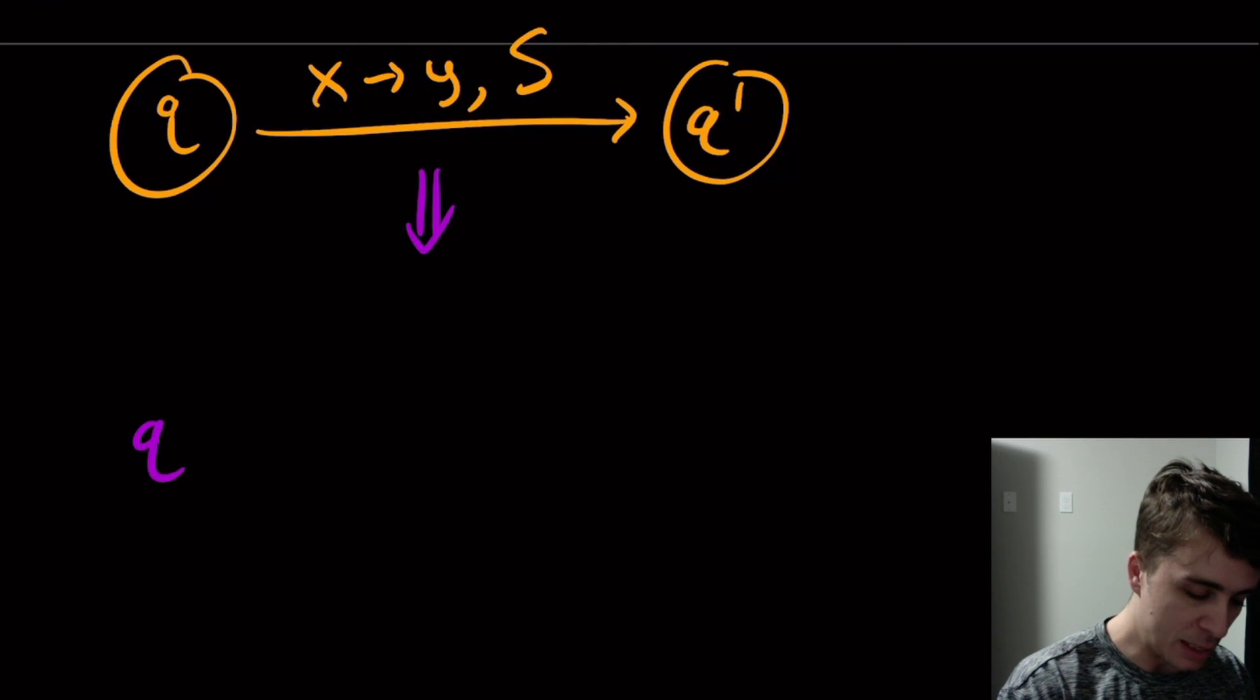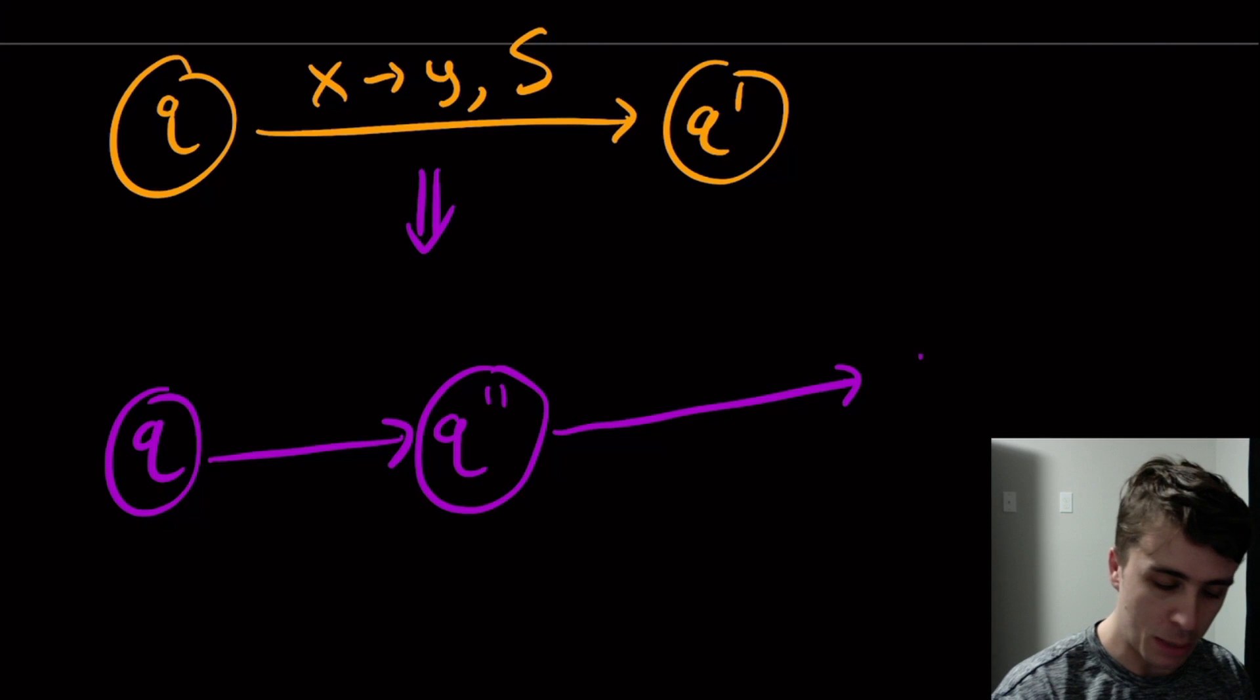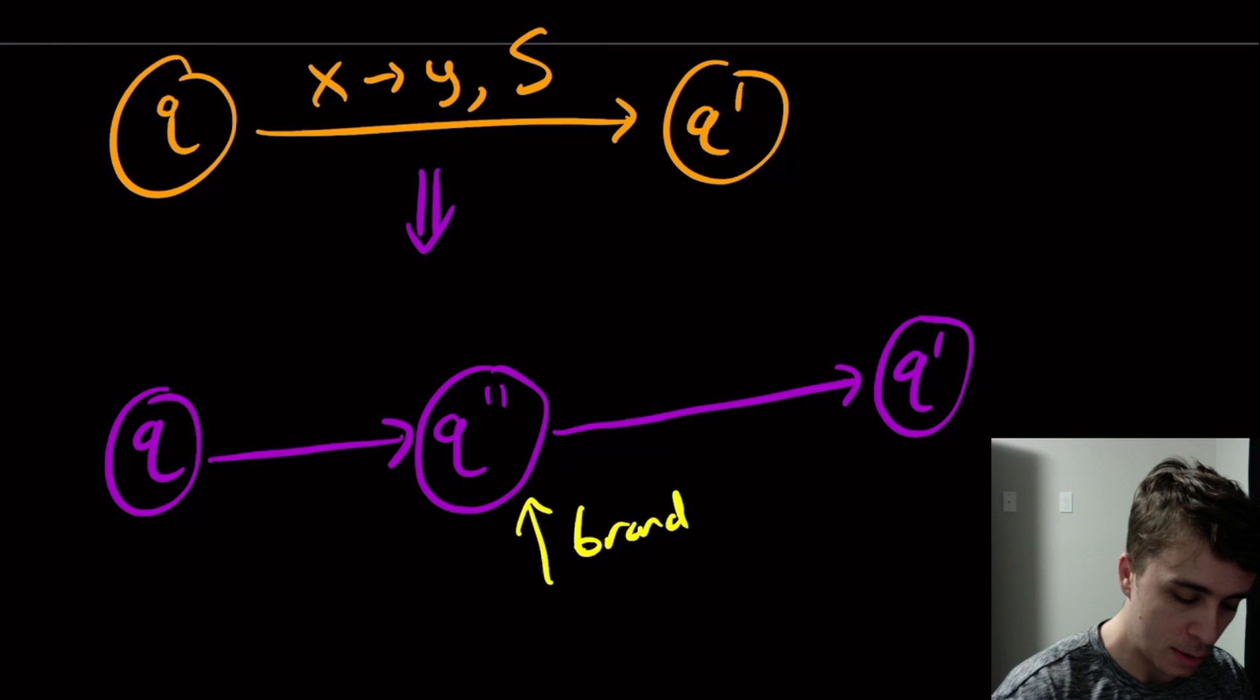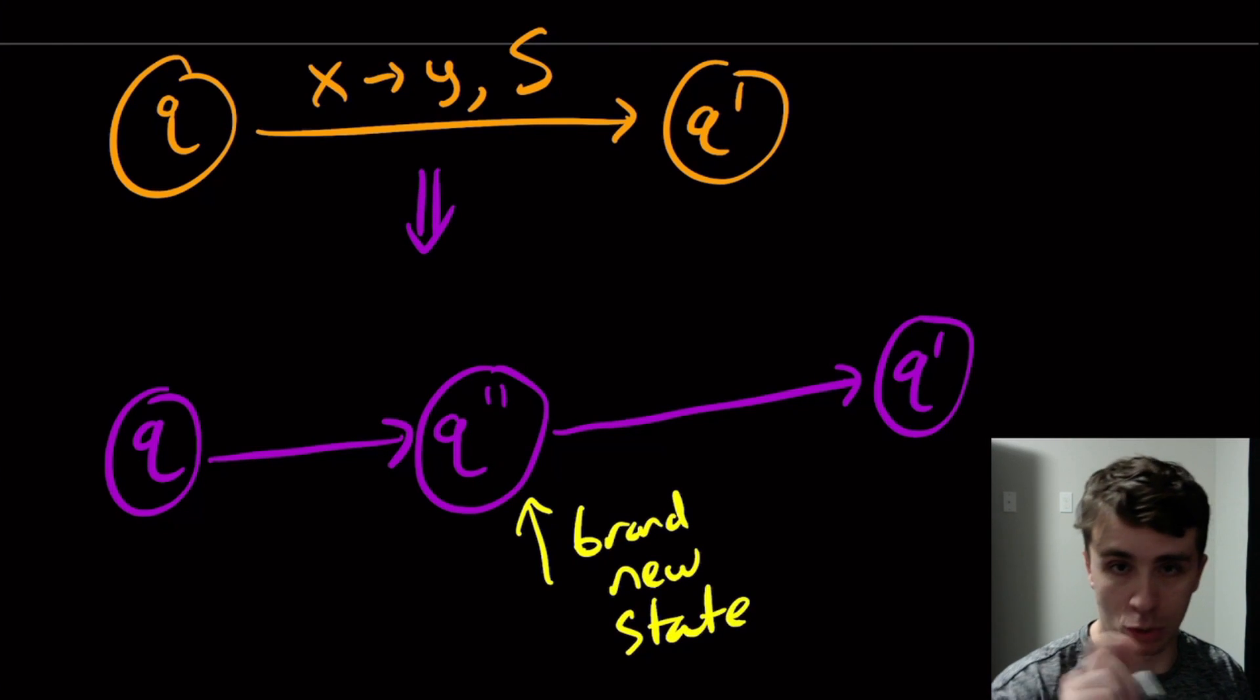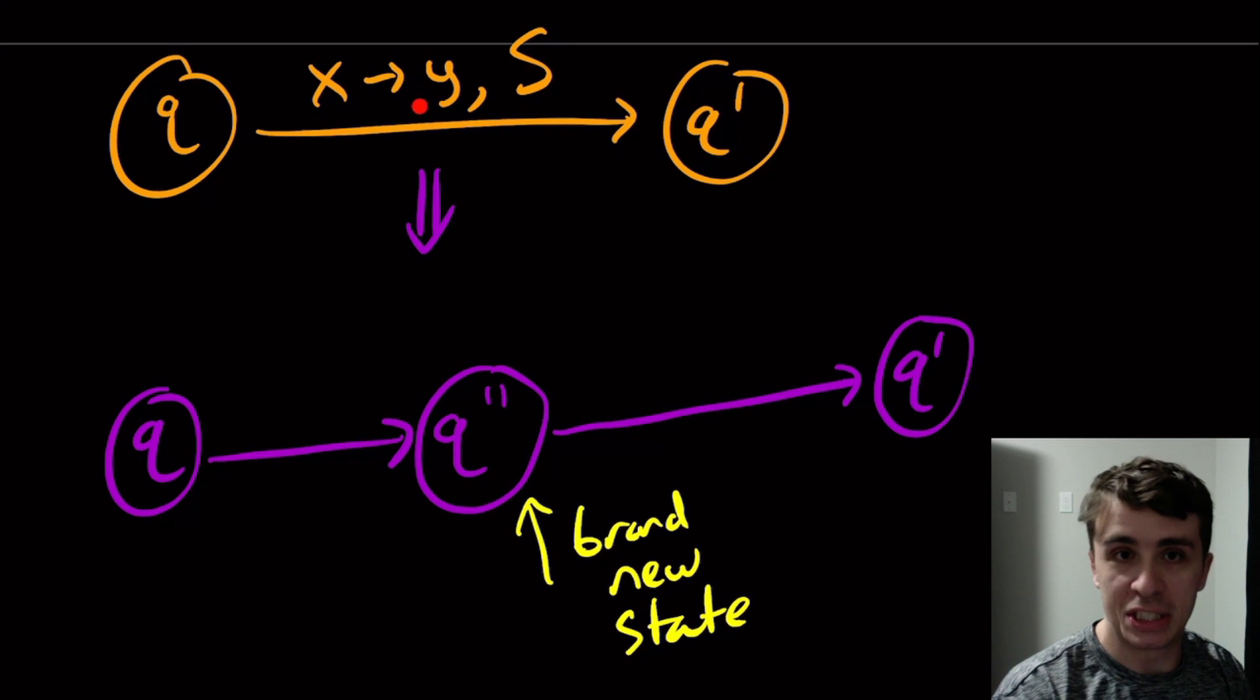So what I'm going to do is I'm going to have Q go into an intermediate state. I'm going to call Q double prime. And from Q double prime, go to the original state we ended up at. So these two are the same state. This is a brand new state. I'm going to note that here. So this is brand new state only for this purpose, only for breaking this up.